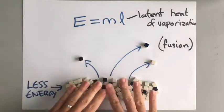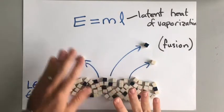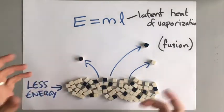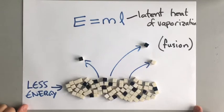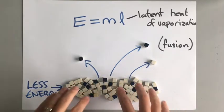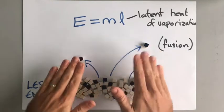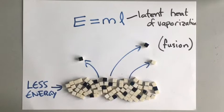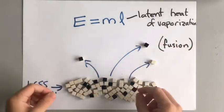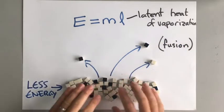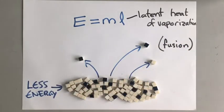If you have more particles then you need more energy to turn them into a gas, which makes a lot of sense. So when we turn a liquid into a gas, we use a certain amount of energy, and that energy is taken away from the liquid — and so the liquid cools down.